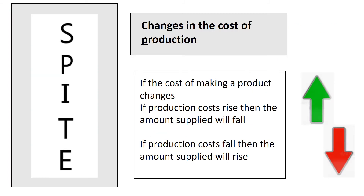Now let's take a look at the P in SPITE, which is the changes in the cost of production. The cost of production is about the total cost of manufacturing a product. If the cost of raw materials increases, or another cost of production such as a national minimum wage or the living wage increases, then supply will decrease at the given price as production costs have increased. This means firms will be less willing to supply as much at that given price and there will be a shift to the left on the supply curve. However, when firms have a lower cost of production, they are going to be willing to supply more at that given price.